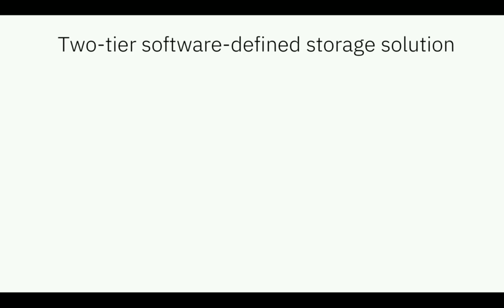So what is Hedwig? Hedwig is a two-tier truly software-defined storage solution, built on a scale-out software architecture which can run on any commodity hardware. Hedwig is flexible enough to accommodate any of the primary and secondary enterprise workloads.